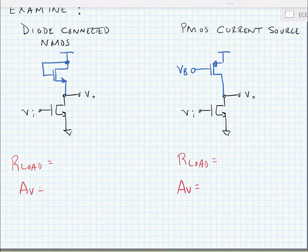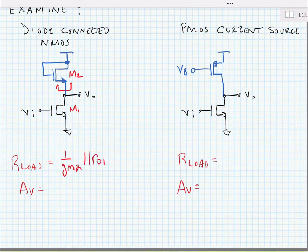Now we know that gm is the same - gm is just the gm of the bottom device - but our load is quite different. If I look into the source of this NMOS diode-connected transistor, I can see that our load is going to be 1 over gm. I'm going to label this M2 and this M1 to avoid confusion. We're going to have a load of 1 over gm2 in parallel with ro1.